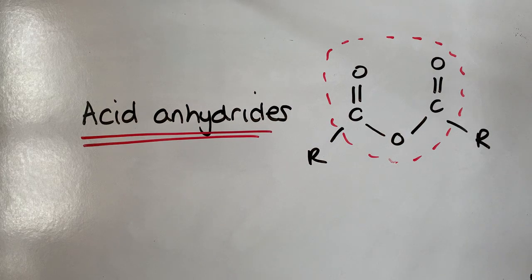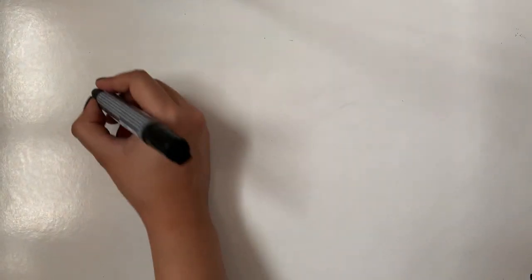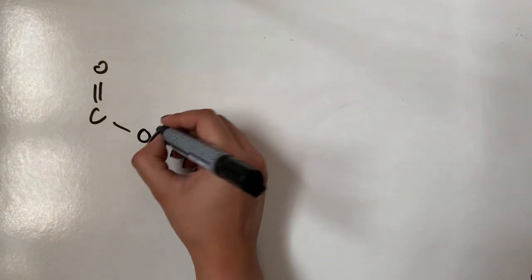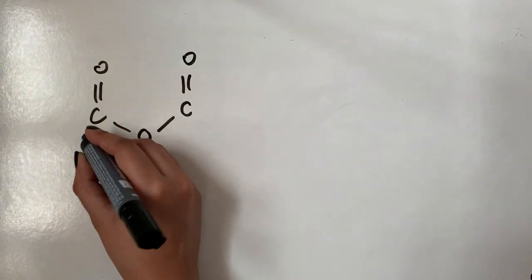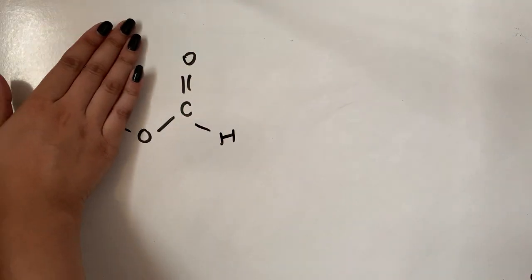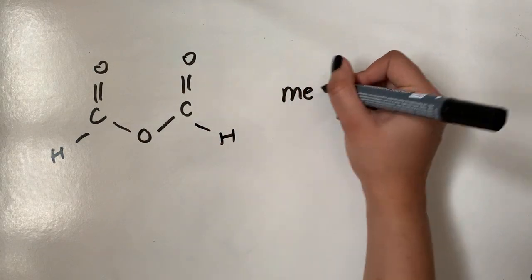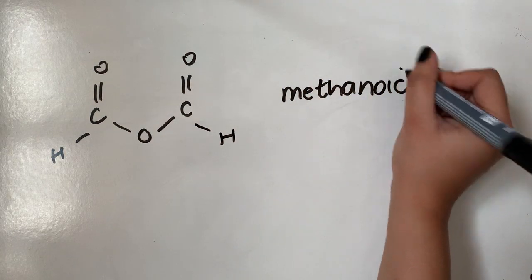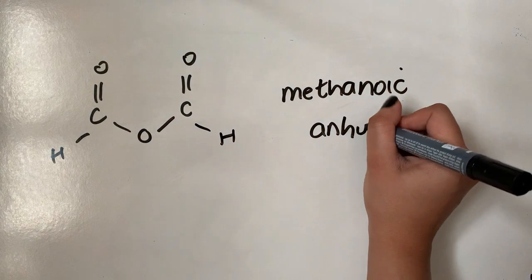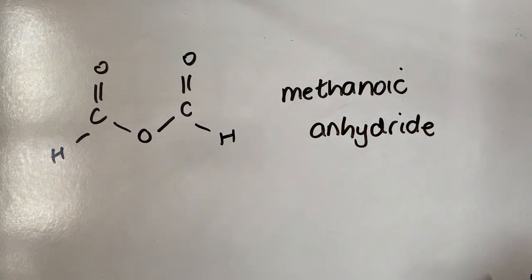Let's have a look at how we might name them. The R groups will be the same. If I start with the simplest one, where the R group is just a hydrogen, as you can see this was made from methanoic acid, and therefore this one here is called methanoic anhydride. Rather than saying acid, we replace that word with anhydride, so it's still -oic at the end — methanoic anhydride.